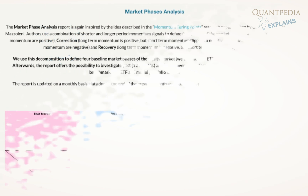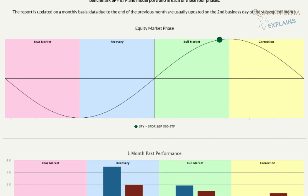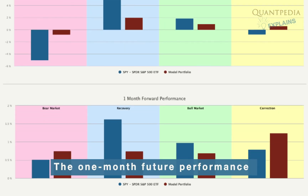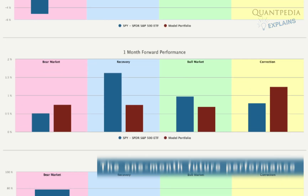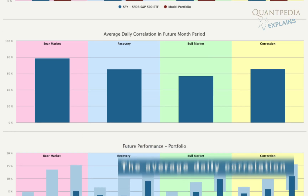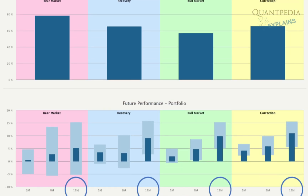Once the stock market development is divided into four phases, you can use this decomposition to examine the average one-month past and one-month future performance. Below is also an opportunity to see the moderate daily correlation or three, six, and 12-month future performances of your model portfolio in each of those phases.